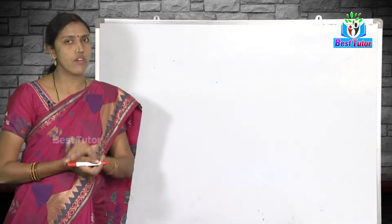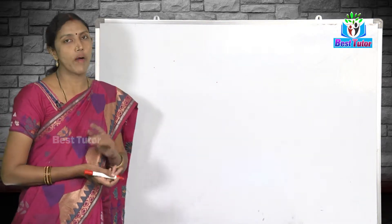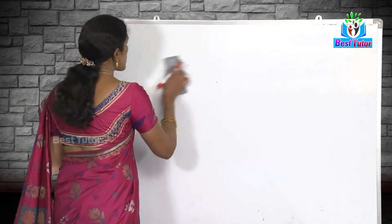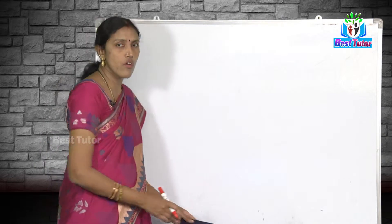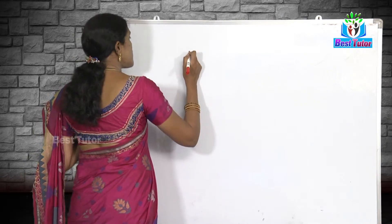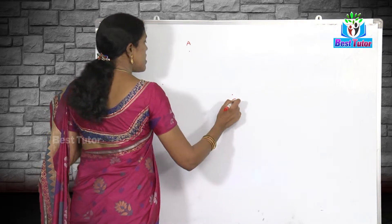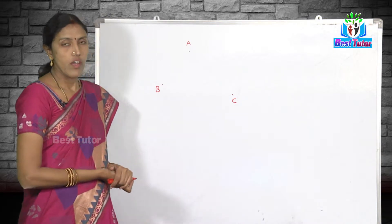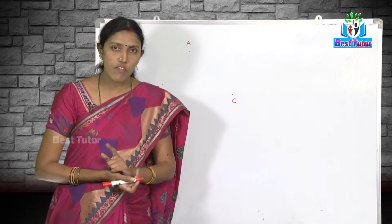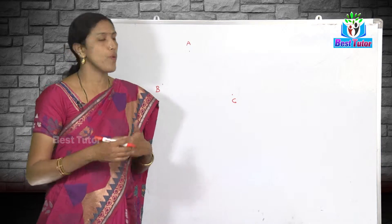If we have three non-collinear points, the theorem states that one and only one circle can be drawn which passes through all these three points. I repeat the statement: one and only one circle passes through three non-collinear points. Let me consider A, B, and C as three non-collinear points. We have to prove that only one circle is possible through these three points.